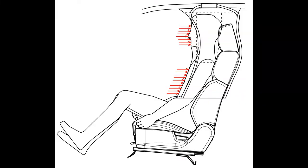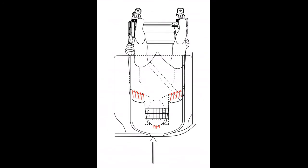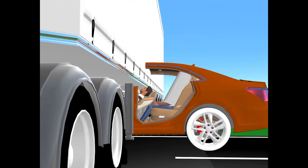The crash scenarios that this invention can assist with include: frontal car crash, driver or passenger side small overlap crash, rear-end crash, side crash, car rollover, and trailer rear or side under-ride guard collisions.